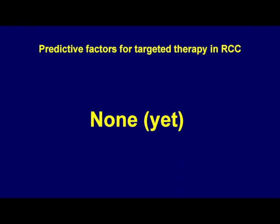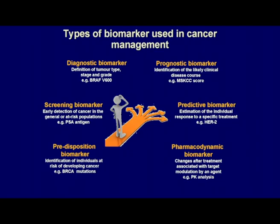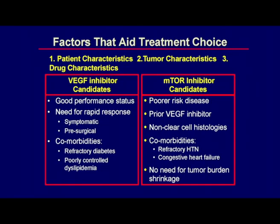What we're looking for in kidney cancer is really predictive factors for targeted therapy, and we really don't have any validated predictive factors yet. We have a variety of different biomarkers that we're using in cancer management, but the most important ones we have at least some preliminary data for need to be validated as prognostic and predictive biomarkers, and in some regards, pharmacodynamic biomarkers. I wanted to review the data that supports the role of mTOR inhibition as a viable cancer option for selected patients. The factors that aid in selecting agents between the classes VEGF and mTOR are shown here.